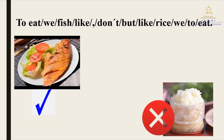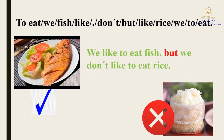In the second one, we have: to eat, we, fish, like, don't, but, like, rice, we, to eat. Now try to organize those words to create the correct answer. Think about it and tell me what is the correct sentence. Excellent! It is: we like to eat fish, but we don't like to eat rice. You're going to repeat after me: we like to eat fish, but we don't like to eat rice.